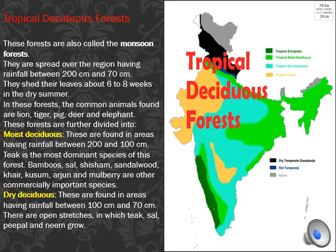Dry deciduous forests are found in areas where rainfall is around 70 to 170 centimeters, present in the peninsular plateau and plains of Bihar and UP. Trees found here are teak, peepal, neem, and sal. Large parts of these forests were cleared for cultivation and some parts are used for grazing. Animals found here include lion, tiger, pig, deer, tortoise, elephant, birds, and snakes.